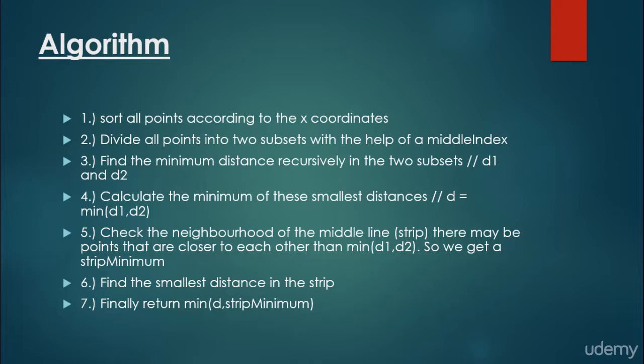Because we are looking for the minimum, we calculate the minimum of d1 and d2 — there is a built-in Math.min function in Java for this. This distance becomes d. Then we have to check the neighborhood of the middle line, the so-called strip, because there may be points closer to each other than this minimum d.